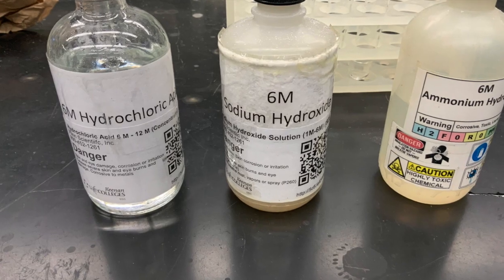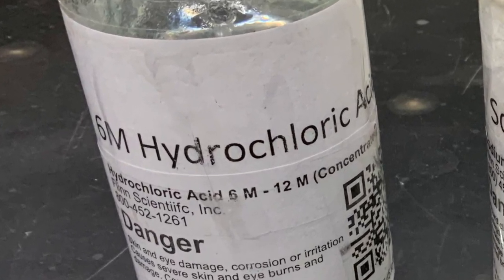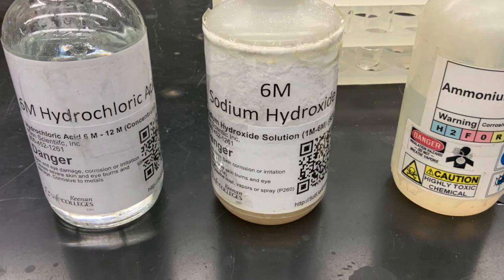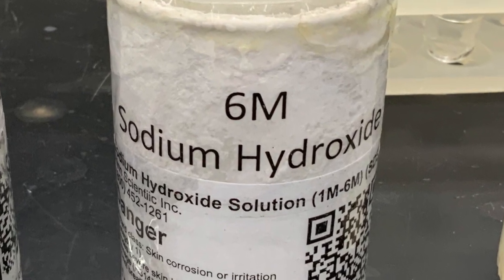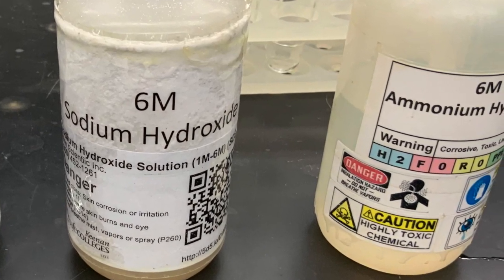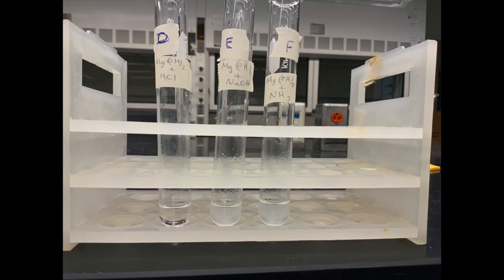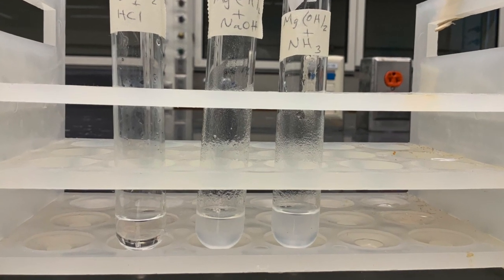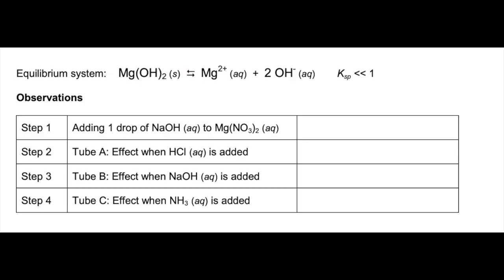To the leftmost test tube, which is tube D, we add 2 drops of 6 molar HCl. To the middle one, which is test tube E, we add 2 drops of 6 molar NaOH. Lastly, to test tube F, the rightmost test tube, we add 2 drops of 6 molar ammonia. We mix the contents and let the solution reach equilibrium. Record what you observe now with the 3 test tubes, D, E, and F. Use these observations to answer the questions in your lab report.